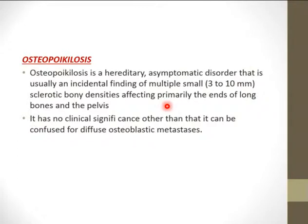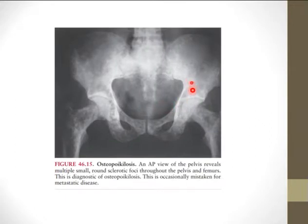Osteopoikilosis consists of multiple bone islands — multiple small 3–10 mm sclerotic bone densities affecting primarily the ends of long bones and the pelvis. It is asymptomatic and an incidental finding with no clinical significance, but should not be mistaken for osteoblastic metastasis.